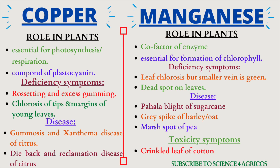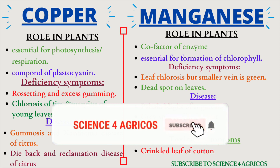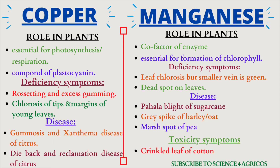Coming to copper and manganese. Copper is essential for photosynthesis and respiration; it is a compound of plastocyanin. Deficiency symptoms are rosetting, excess gumming, and chlorosis of tips and margins of young leaves. Diseases associated with copper deficiency are gummosis and exanthema disease of citrus, and dieback and reclamation disease. For manganese, it is a co-factor of enzymes and is essential for chlorophyll formation. Deficiency symptoms are leaf chlorosis with smaller veins remaining green and dead spots on leaves. Diseases due to manganese deficiency are pahala blight of sugarcane, grey speck of barley or oat, and marsh spot of pea. The toxicity symptom is crinkled leaf of cotton.